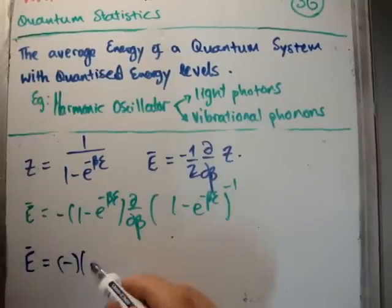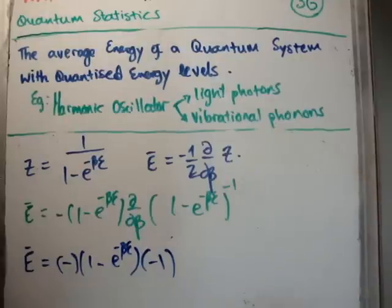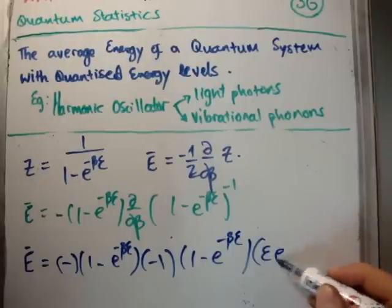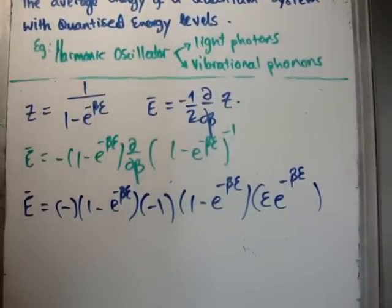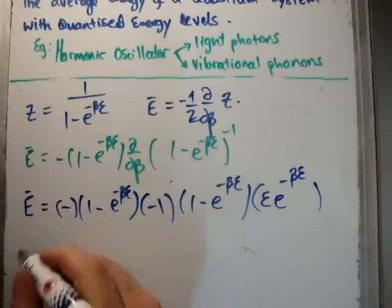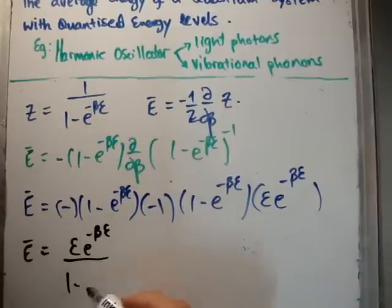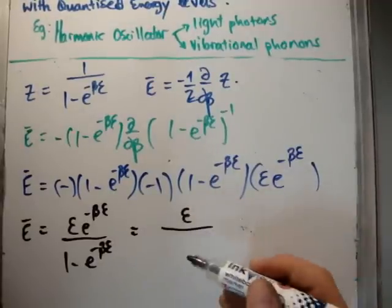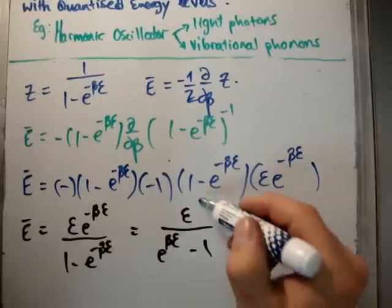Carrying out the differentiation — bringing down the power of -1 and differentiating the argument — gives a factor of ε·e^(-βε). After simplification, Ē = ε·e^(-βε) / (1 - e^(-βε)). Dividing numerator and denominator by e^(-βε) gives the clean result: Ē = ε / (e^(βε) - 1).